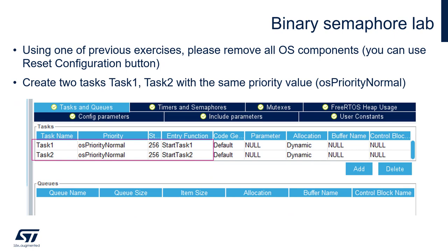Let's start from STM32CubeMX or STM32CubeIDE operations. We can reuse any of the existing examples. Within the FreeRTOS configuration, please go to the Tasks and Queues tab. By clicking the Add button, please add two tasks: Task 1 with entry function StartTask1 and Task 2 with entry function StartTask2. Set the same priority for both of them to OSPriorityNormal and set the same stack size to 256 bytes.